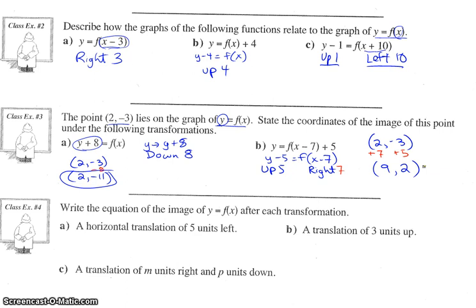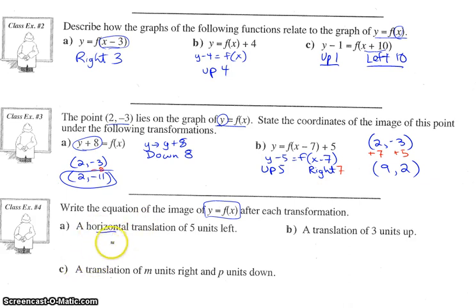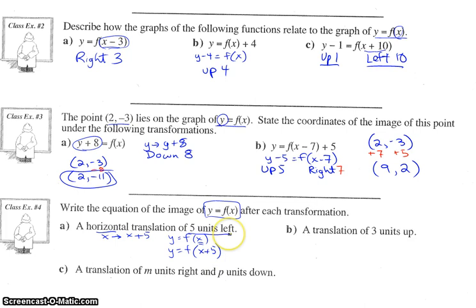Example four: write the equation of the image of y equals f of x after each transformation. We've got to work backwards — they're telling us the translation and we have to come up with the equation. For part a, a horizontal translation of five units left: x gets replaced with — opposite — x plus five. So in our equation y equals f of x, we scoop x out and put in f at x plus five.